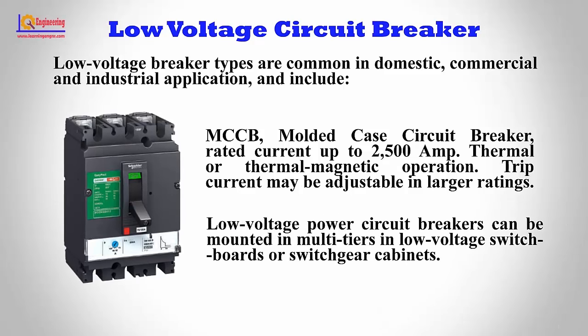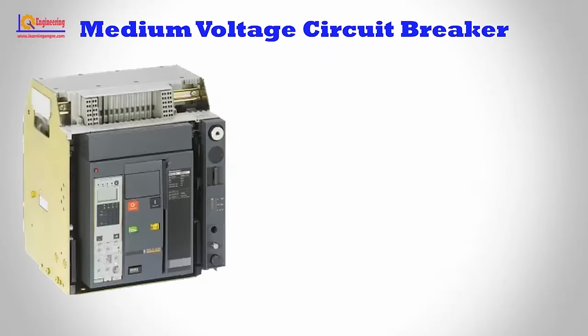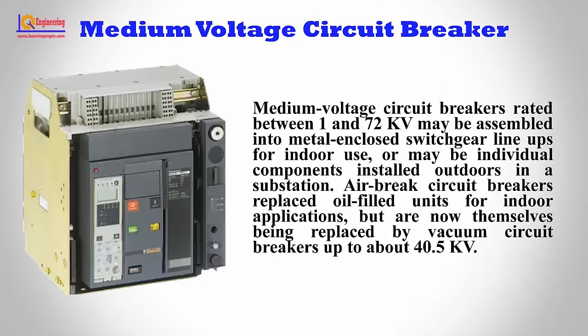Low voltage power circuit breakers can be mounted in multi-tiers in low voltage switchboards or switchgear cabinets. Medium Voltage Circuit Breakers, rated between 1 and 72 KV, may be assembled into metal enclosed switchgear lineups for indoor use or may be individual components installed outdoors in a substation. Air break circuit breakers replaced oil-filled units for indoor applications but are now themselves being replaced by vacuum circuit breakers up to about 40.5 KV.